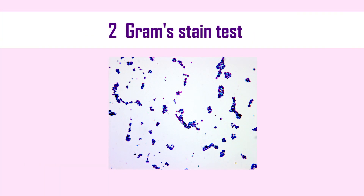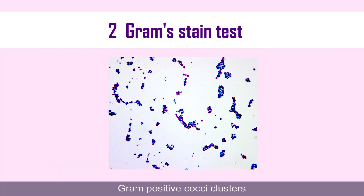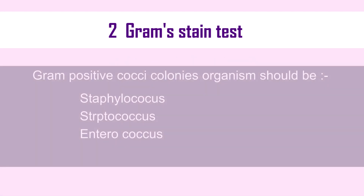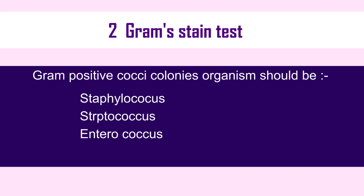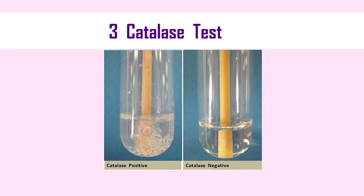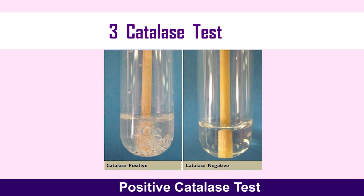We can then perform a Gram stain, which gives gram-positive cocci in clusters. If the Gram stain gives gram-positive cocci, the organism could be Staphylococcus, Streptococcus, or Enterococcus. After that, we perform the catalase test — Staphylococcus aureus gives a positive catalase test result.